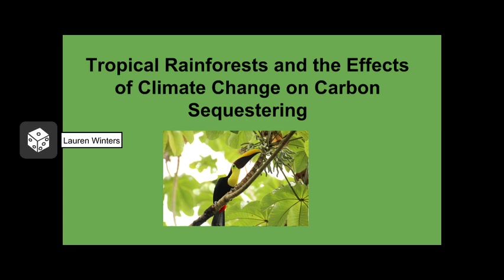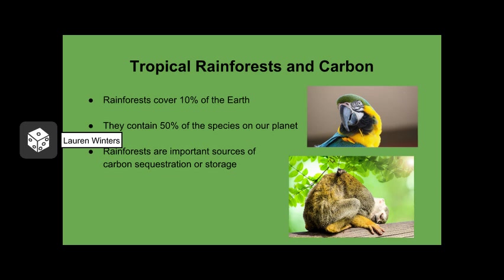Tropical Rainforests and the Effects of Climate Change on Carbon Sequestering. Rainforests cover a relatively small area of our planet — only about 10% of the Earth's landmass is covered by tropical rainforests. However, they contain 50% of the species on our planet. Tropical rainforests are important for many reasons. One of the main reasons these forests are so important for the health of the planet is that they act as sources of carbon sequestering or storage.